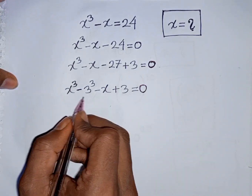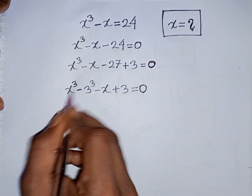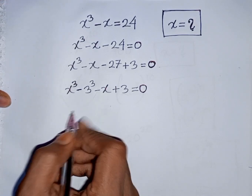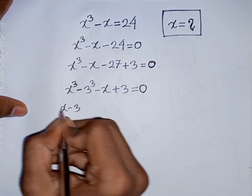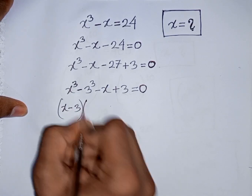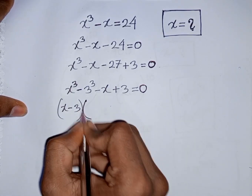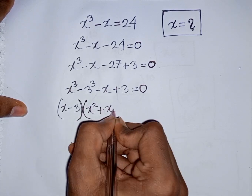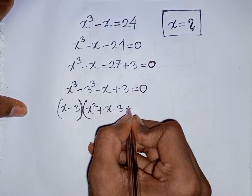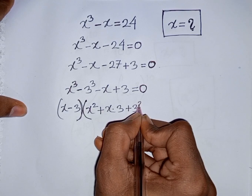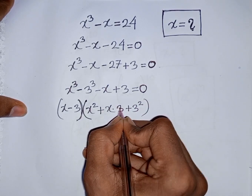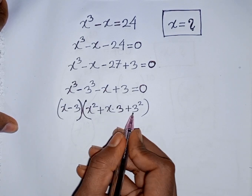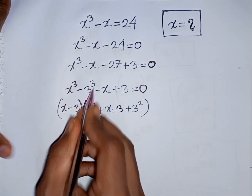Here you can apply the formula of a³ - b³, where a = x and b = 3. According to the formula, x³ - 3³ = (x - 3)(x² + x·3 + 3²). The formula for a³ - b³ is (a - b)(a² + ab + b²).